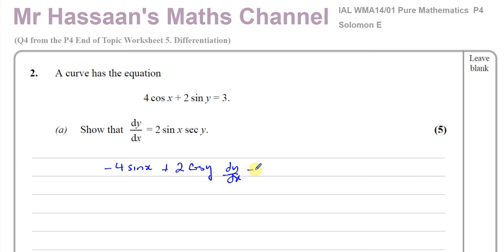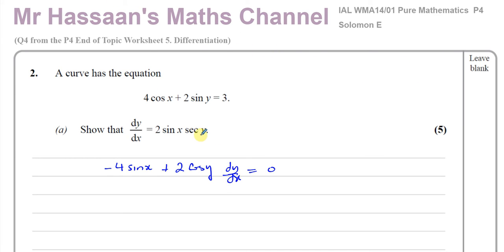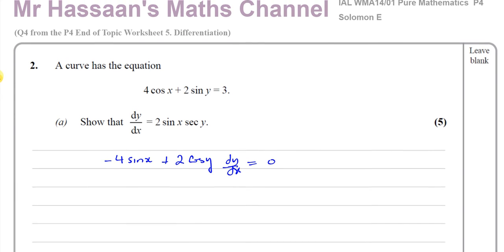When you differentiate y, you get dy/dx, so it will be 2cos(y) times dy/dx. When you differentiate a constant with respect to x, you get 0. This is the chain rule — for example, if I was differentiating sin(3x²), I would get cos(3x²) multiplied by 6x, the differential of what's inside the function. So the sine of something became the cosine of the same thing, then we multiplied by the differential of what's inside. Inside the function is y, so the differential of y with respect to x is dy/dx. That's why we write that dy/dx at the end. When you've got something in terms of y, you have to write dy/dx at the end when you differentiate it.